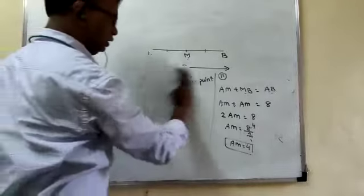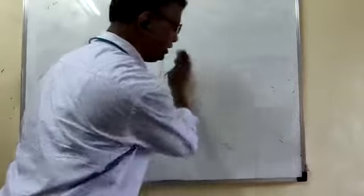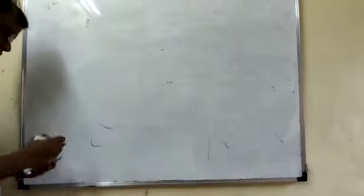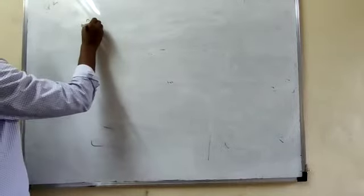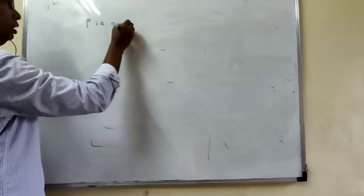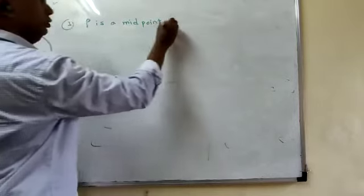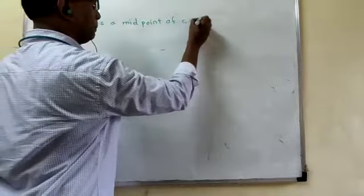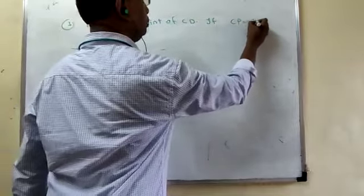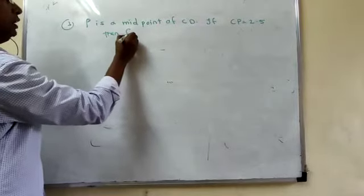The third question is given. It is given that P is a midpoint of CD. If CP is 2.5, then find CD.